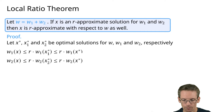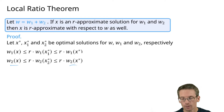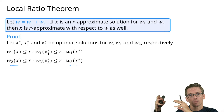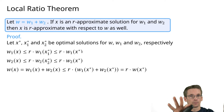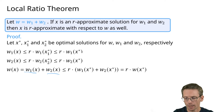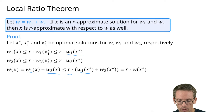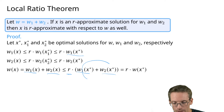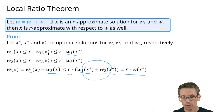We do the same for w2 and get w2(x) ≤ r · w2(x*). Adding these up: w(x) = w1(x) + w2(x) ≤ r · w1(x*) + r · w2(x*) = r · w(x*). This is exactly what we wanted to prove: having an r-approximation on both w1 and w2 gives an r-approximation for the original problem.